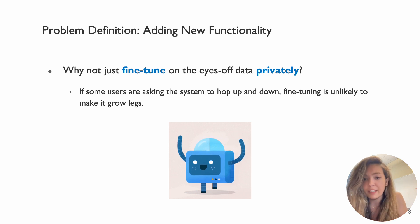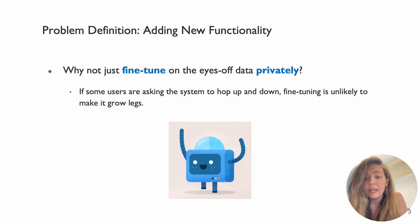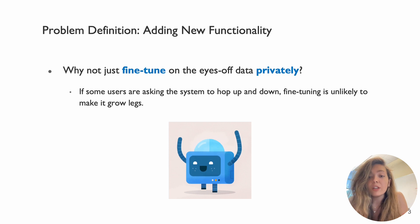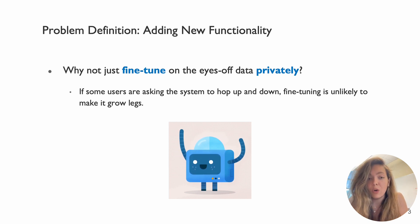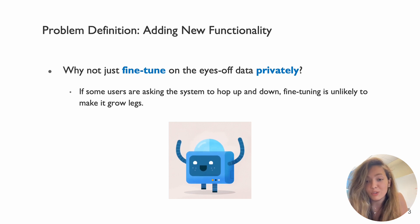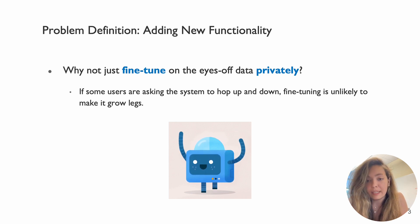We might think that if we fine-tune privately on some of the user data, then we can get better models. But this is not going to help if the users are actually asking for functionality that doesn't exist. So if the users are asking the model to jump up and down, fine-tuning is not going to make it grow legs.